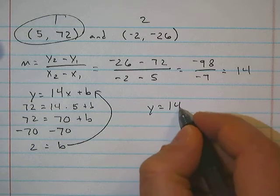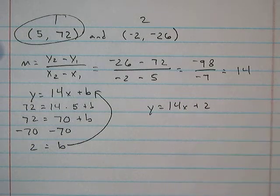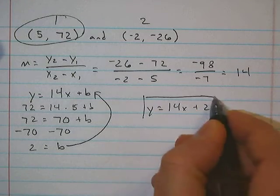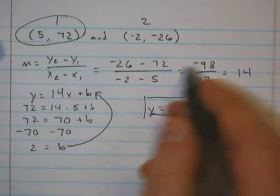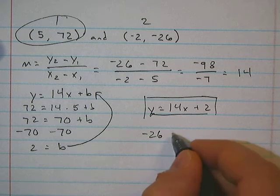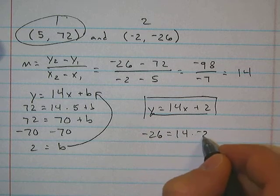Subtract 70 from both sides. And 2 is left over, b is there. Substitute that back in. Y equals 14x plus 2. So that's the equation for that one.